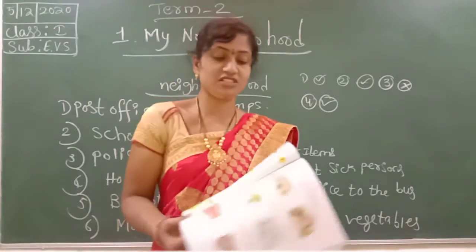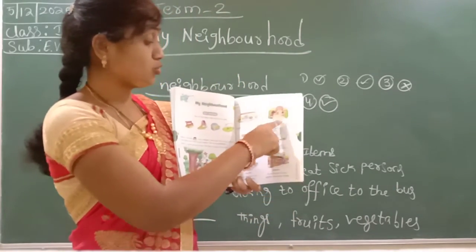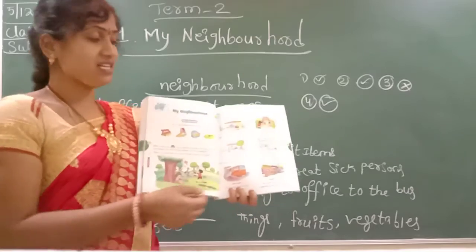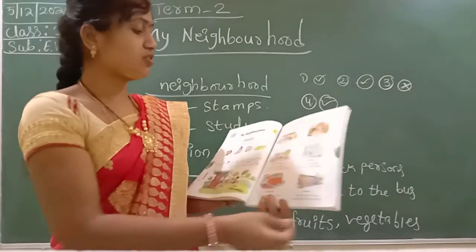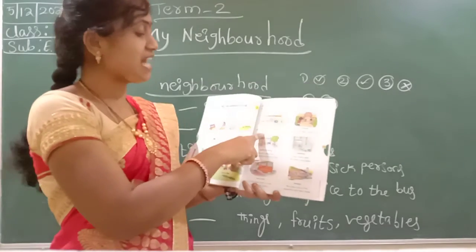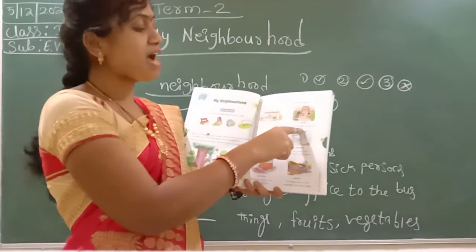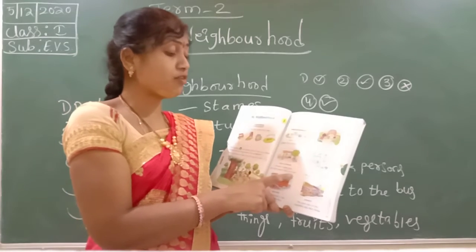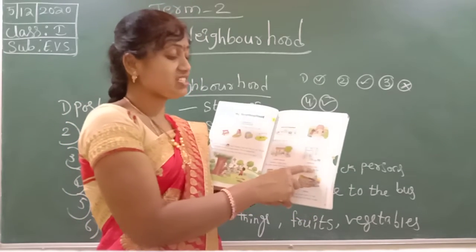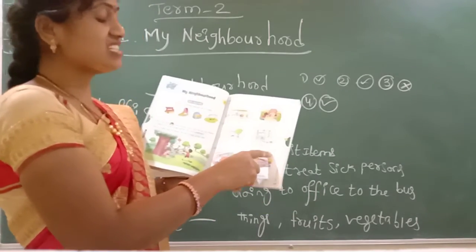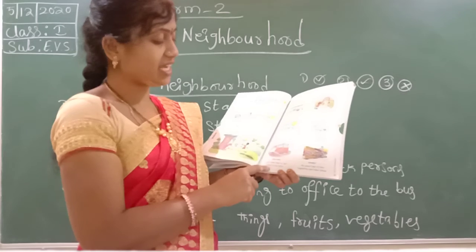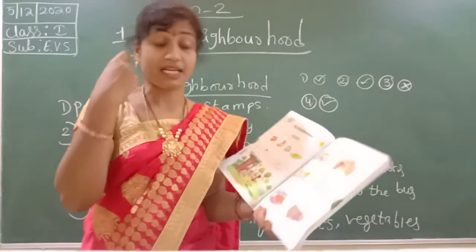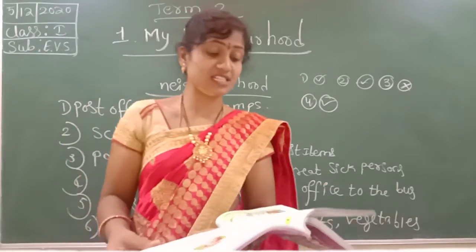So here pictures are given. See, once we have to observe these pictures: post office, school, police station, hospital, bus stop, market. Very small lesson. Post office means grandpa buys stamps from here. School means my friends and I study here. Police station means mummy works here. She helps people find lost items. Hospital — papa works here, he treats sick people. Bus stop — uncle waits here to take a bus to his office. Market — we come here to buy vegetables and other things. I hope you understand — very easy lesson.